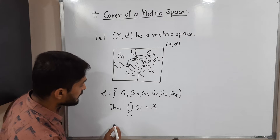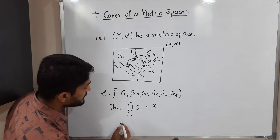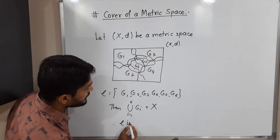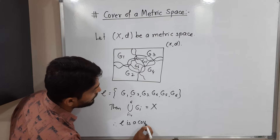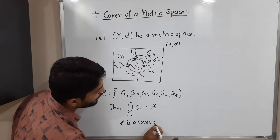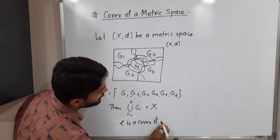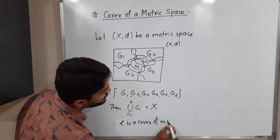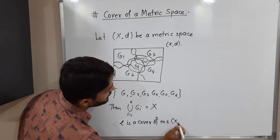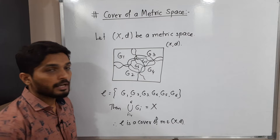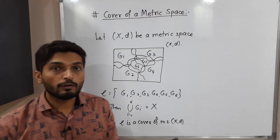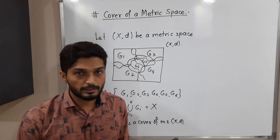Therefore, script C is a cover of metric space X, D. So this is the actual meaning of cover of a metric space.